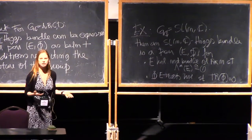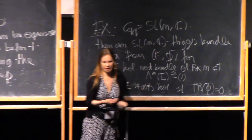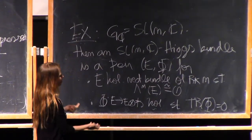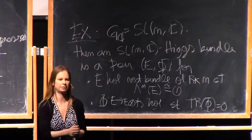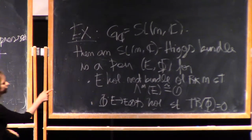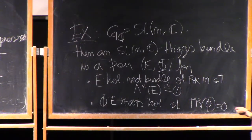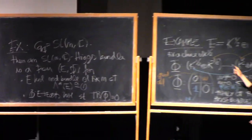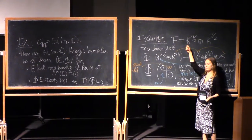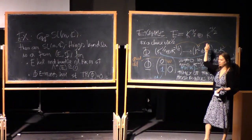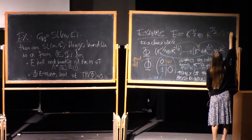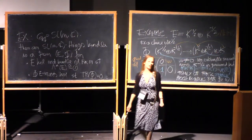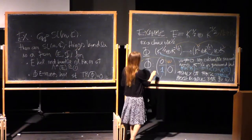If you have a symplectic group, what you get is a symplectic vector bundle — a bundle with a symplectic bilinear form, a non-degenerate bilinear form — and the Higgs field will be compatible with the form, so it will commute with the symplectic form. For orthogonal groups, you have an orthogonal form. Going back to our rank-2 example, the vector bundle was the sum of a line bundle and its dual, so when we take the top exterior power, which is the second exterior power for a rank-2 bundle, this is the product of the two line bundles, and the product of a line bundle and its dual is trivial. So the top exterior power of E is indeed trivial, and our Higgs field was indeed traceless.